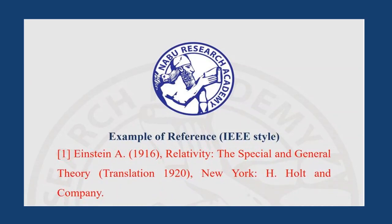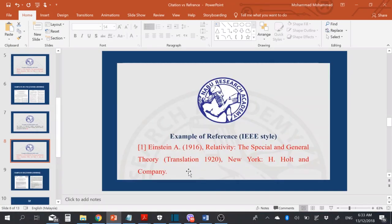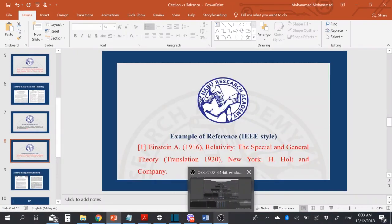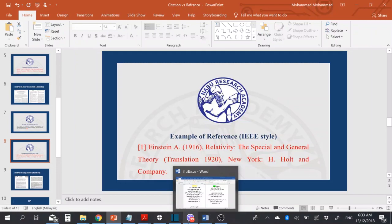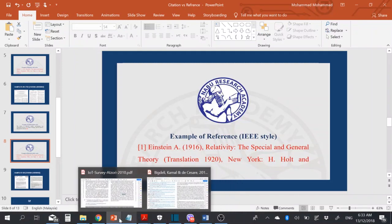So that is the difference between IEEE and APA style. Your paper should follow only one style — this depends on the journal. If the journal format requires APA style, you use APA style. If the journal format is IEEE style, you follow IEEE style. Let me show you another example for IEEE.